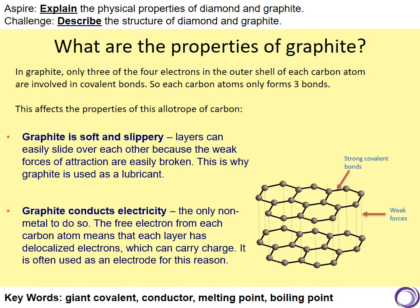Graphite is soft and slippery — the layers slide over each other. This is why graphite is used as a lubricant, and graphite conducts electricity; it's the only non-metal to do so. The free electron from each carbon atom means that each layer has delocalised electrons. These can carry a charge, and for this reason in science experiments and in the laboratory you will have often seen that graphite is used as an electrode. Remember that the strong covalent bonds between the atoms are very strong, but between the layers there are weak intermolecular forces, and this is why graphite is slippery.